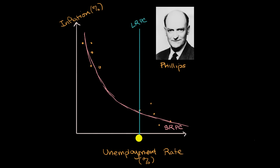Let's say for this economy the natural rate of unemployment is 4%, associated with 1% inflation. If there are perturbations — the economy gets a little overheated — you could get slightly higher inflation and lower unemployment. Or if the economy slows, you'd have higher unemployment and lower inflation. But it should gravitate back to the long-run Phillips curve.